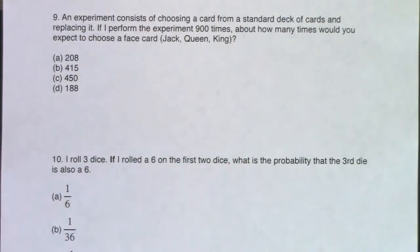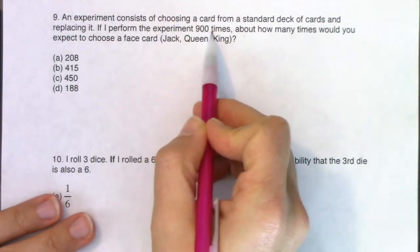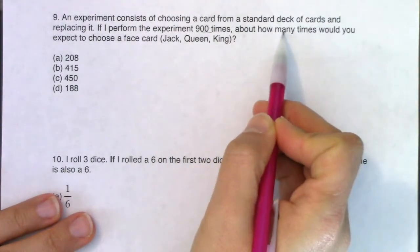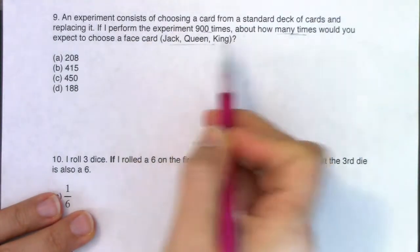An experiment consists of choosing a card from a standard deck of cards and replacing it. So that replacing it is important. If I perform the experiment 900 times, about how many times would you expect to choose a face card? Why the replacing it becomes important is because that means each time that you're selecting a card, there were 52 cards to choose from. If I wasn't replacing it, it would severely change the problem, but I'm replacing it.